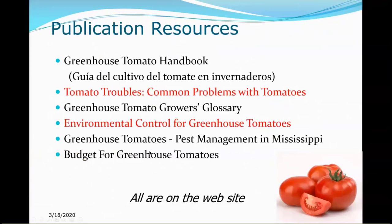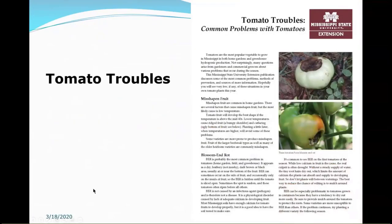For further reading, the two recommended resources from the website are 'Tomato Troubles: Common Problems with Tomatoes' and 'Environmental Control for Greenhouse Tomatoes' — both are free downloads. 'Tomato Troubles' covers blossom end rot, cracks, misshapen fruit, and other issues with good pictures.